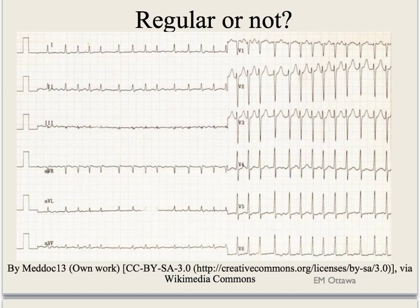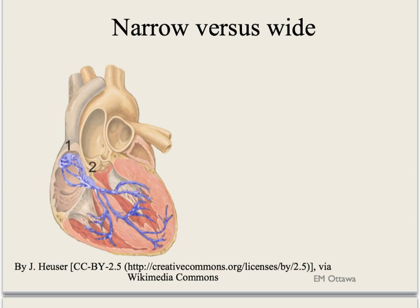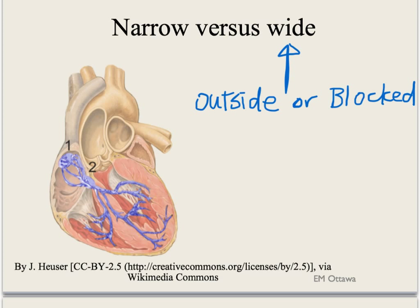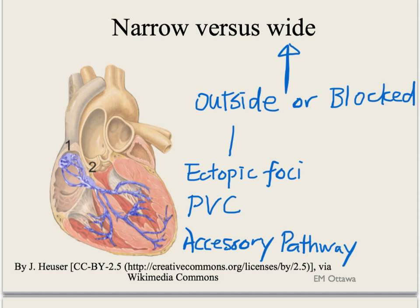Let's look at this ECG — is this regular or irregular? Sometimes when the heart rate is really high, the irregularity is subtle. However, if you map out the individual QRS complexes on a piece of paper, you can see that this rhythm is irregular. Regarding narrow versus wide QRS complex: when ventricular depolarization occurs from the normal conduction system, the QRS complex is narrow. Activation partially outside the normal pathway, or from a blocked normal pathway, will result in a wide QRS complex. These include ectopic foci, premature ventricular activation, accessory pathway, and for blocked conduction system, things like bundle branch blocks.